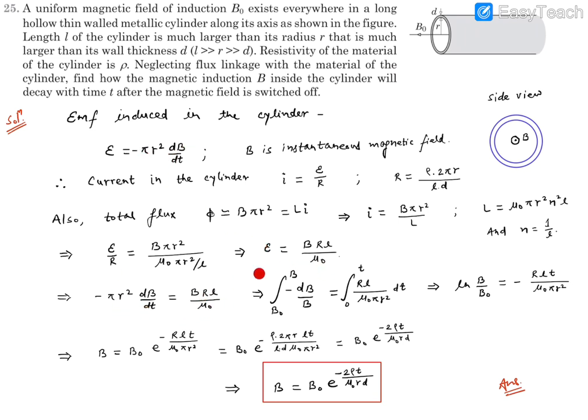This E is -πr²(dB/dt), and this was BRL/μ₀. Then you find we can bring this B to the other side, so dB/B = -(RL/μ₀πr²)dt.